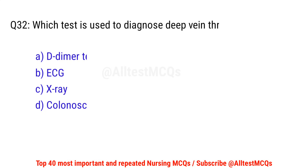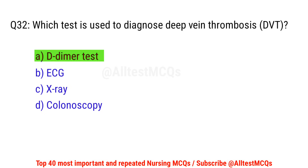Question No. 32: Which test is used to diagnose deep vein thrombosis? The right option is A: D-dimer test.